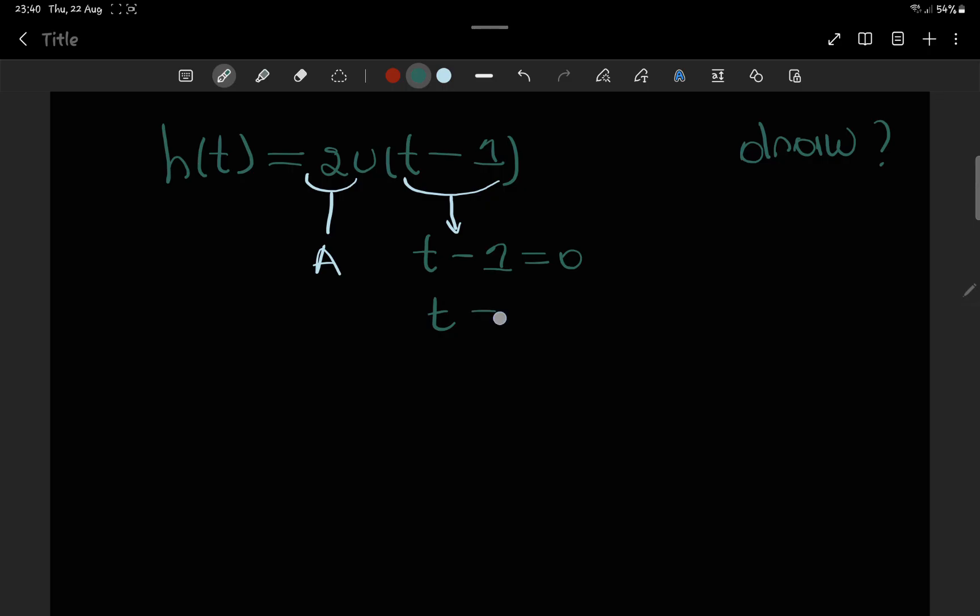Zero, so t will be equal to 1, because you move this one to the other side and it becomes positive. Now, this is how the graph is going to be. So this is where we have t, and this is where we have positive A and here negative A.